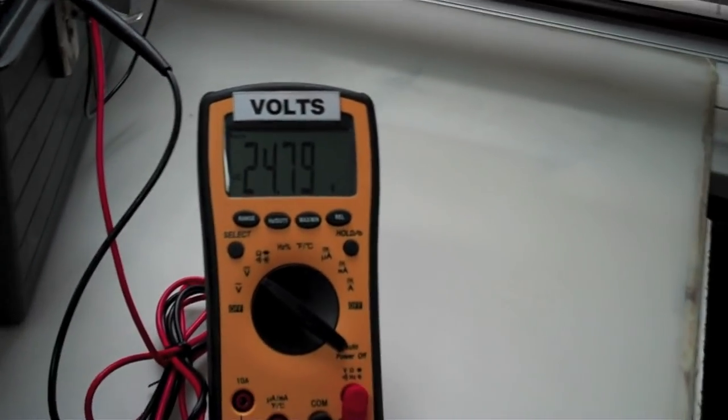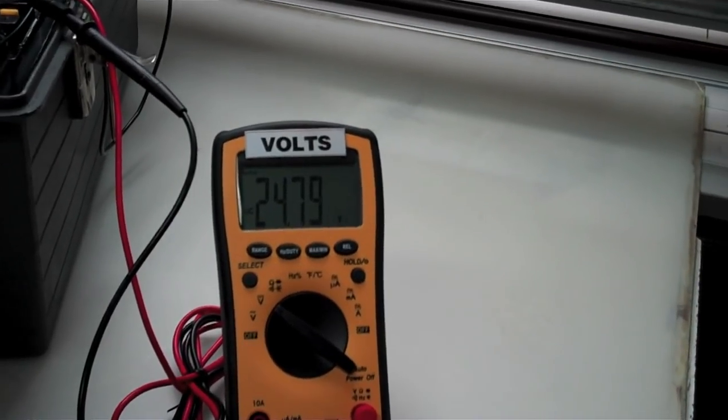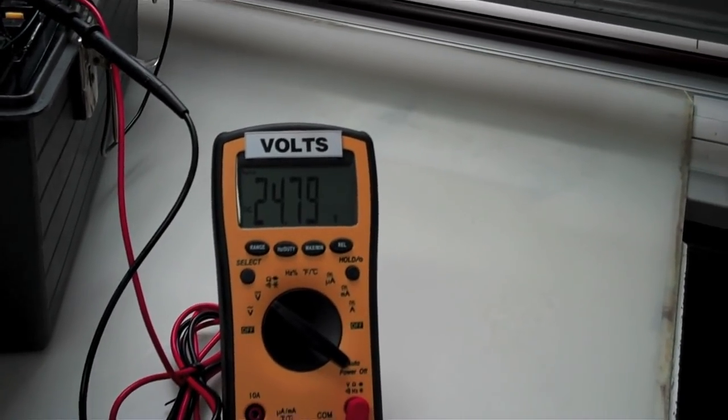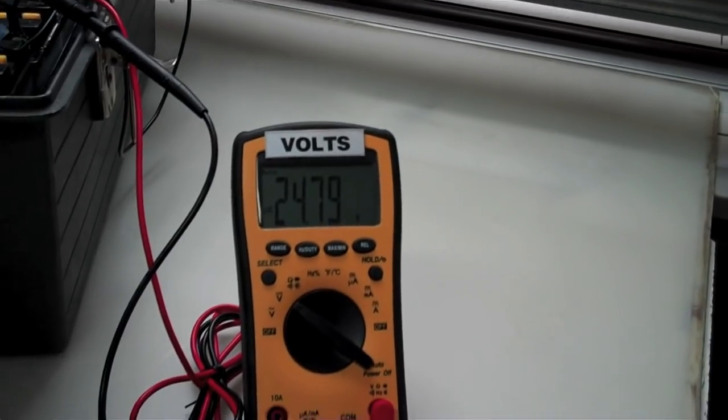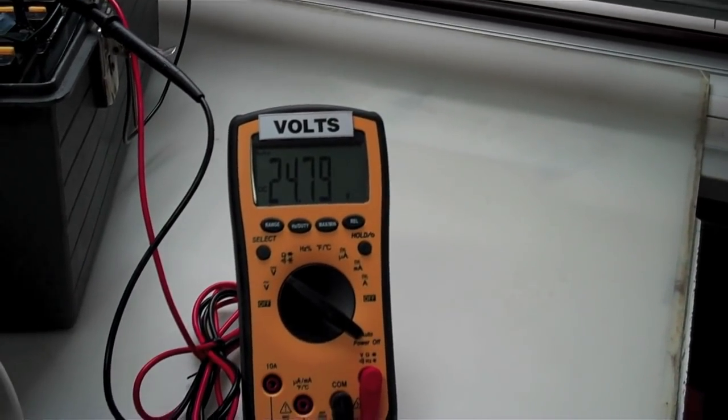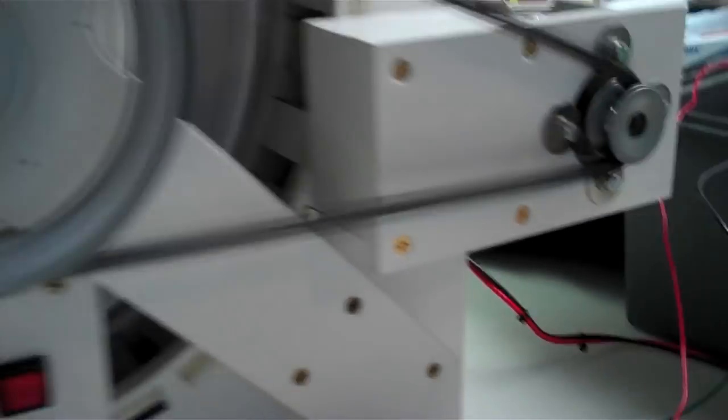We can call it 24.8 volts and just round it off to 12.4 volts per battery. And what we want to do is bring those, each of those up to over 13 volts. See how fast it can do that or if it can do that and take it from there. So let's begin. Make this connection.